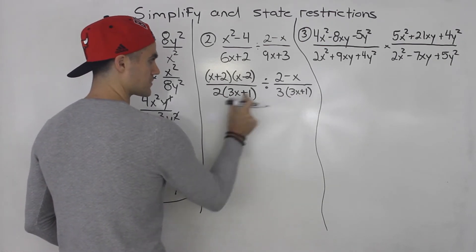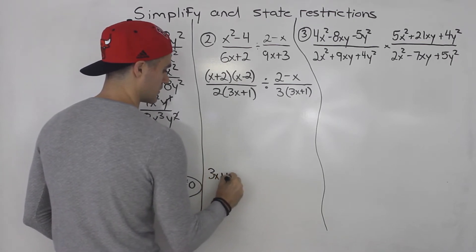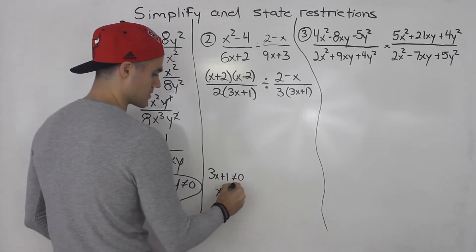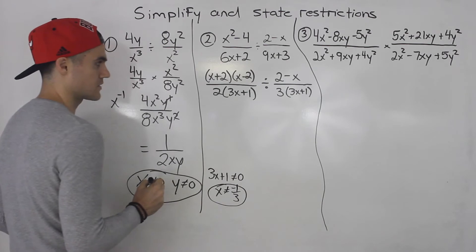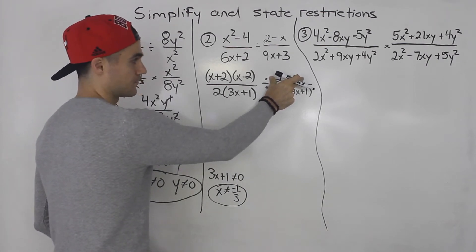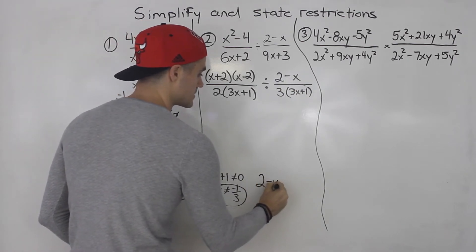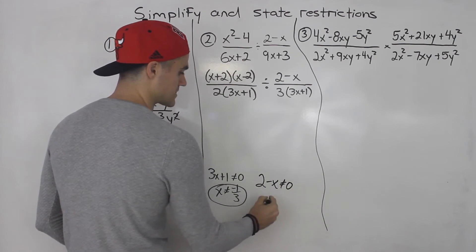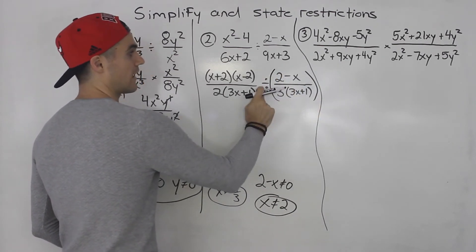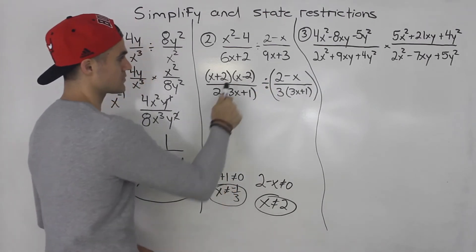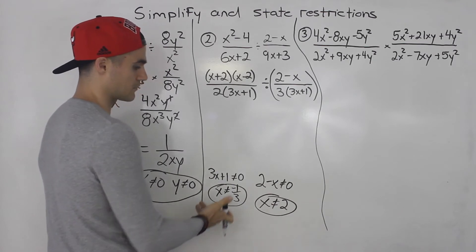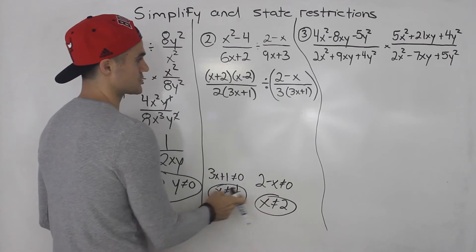Now it's time to get the restrictions. Notice 3x plus 1 appears in the denominators, so 3x plus 1 cannot equal 0, which means x cannot equal negative 1 over 3 — that's one restriction. Since we are dividing, we also figure out when the numerator of the rational expression we're dividing by equals 0. So 2 minus x cannot equal 0, meaning x cannot equal 2. If x is 2 the numerator would be 0, making the whole thing 0, and you can't be dividing by 0. So there are two restrictions.